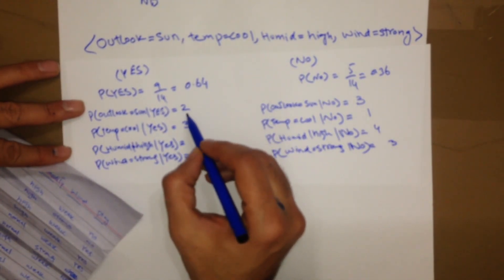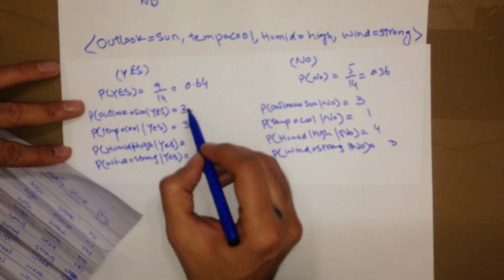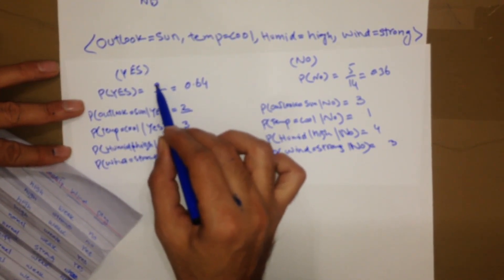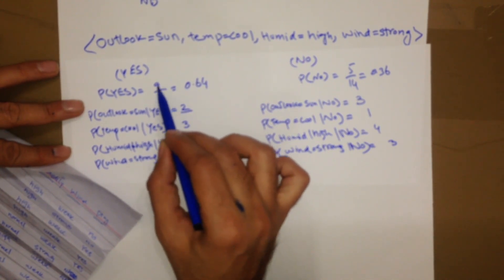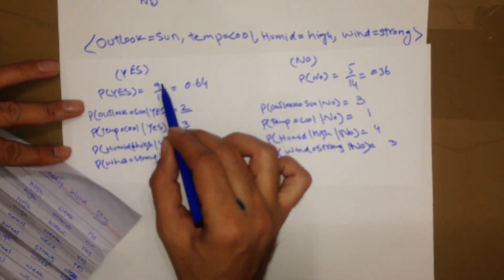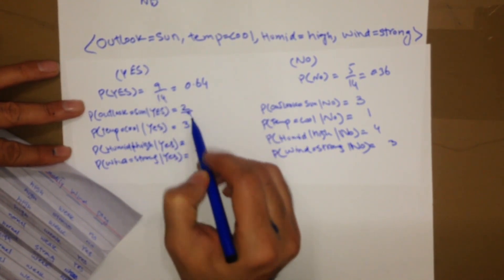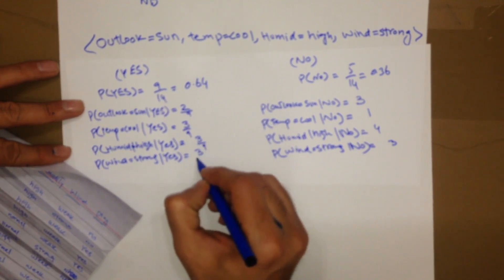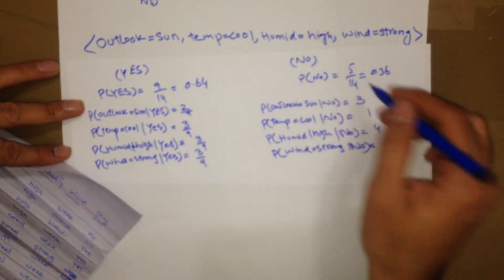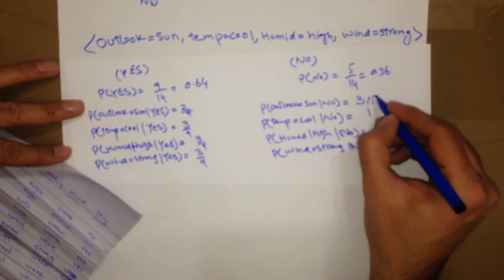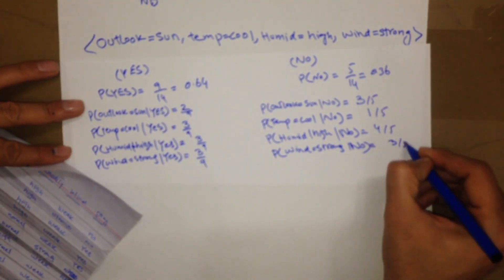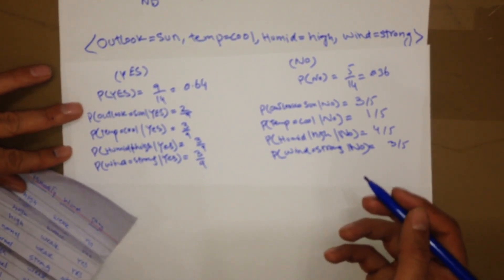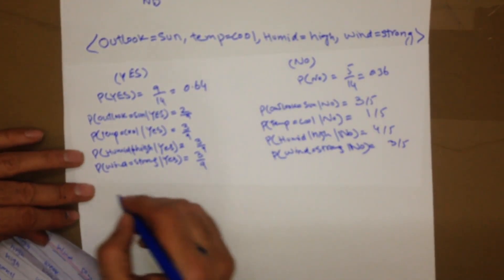Each count should be divided by the total of its class. The yes counts are divided by 9 (total yes), and the no counts are divided by 5 (total no). So we get: 3/5, 1/5, 1/5, 3/5 for the no probabilities.